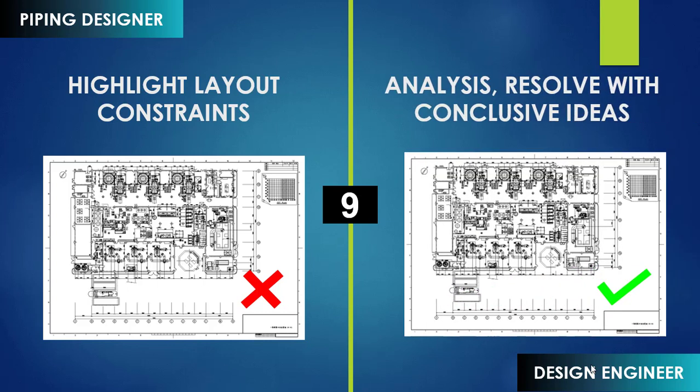The role of the design engineer is to analyze the situation, make as many discussions as possible, check with the standards, consult good technical people who can resolve the issue, and come out with conclusive ideas to resolve the constraints. By this way, we can produce a very good design. If designers don't observe and share constraints with the design engineer, it may create a bigger problem in the future.